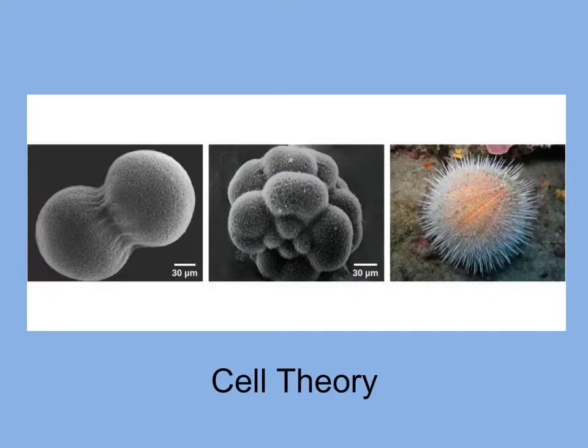You started off as a single egg. Fertilized eggs, or zygotes, divide and develop into the mature organism. This illustrates a concept in biology we call cell theory. This theory states that all life is composed of cells, and that all cells arise from pre-existing cells.